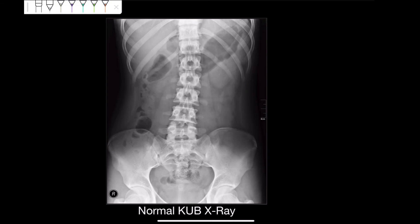Dear students, today we will be learning interpretation of x-ray. The x-ray we have chosen is an abdominal x-ray, and this is an anterior posterior view of an x-ray abdomen. Specifically, if you can see at the bottom of this x-ray, it is saying KUB x-ray.